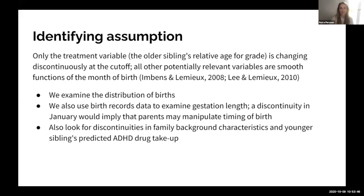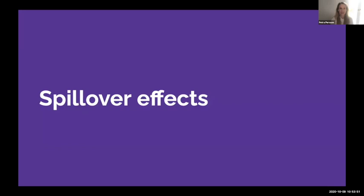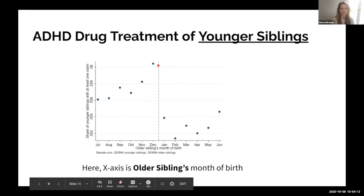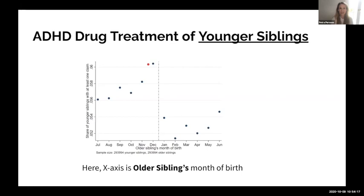This graph presents graphical evidence — essentially the same graph as before, but now plotting ADHD treatment of younger siblings against their older sibling's month of birth. We see that children with an older sibling who is youngest for grade are substantially more likely to use ADHD drugs than children with an older sibling who is oldest for grade.